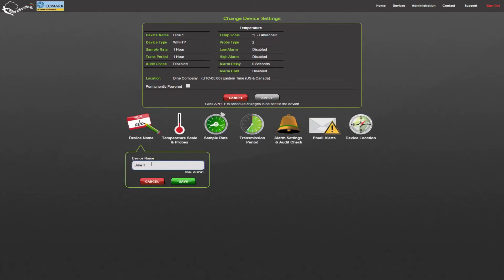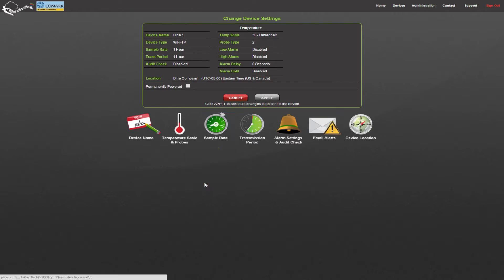I can give my device a name. I can switch from Fahrenheit to Celsius. I can change the sample rate which controls how often the device takes a temperature reading. I can change the transmission period which controls how often the device saves the data to the cloud.